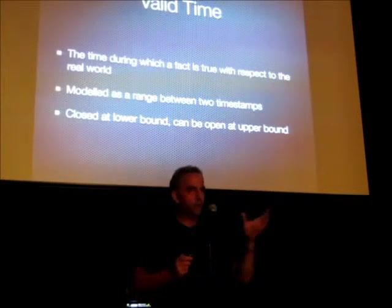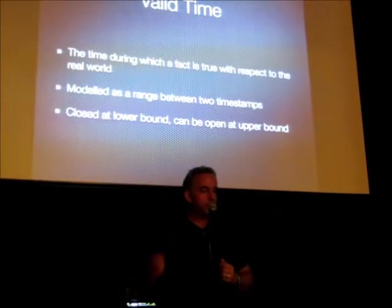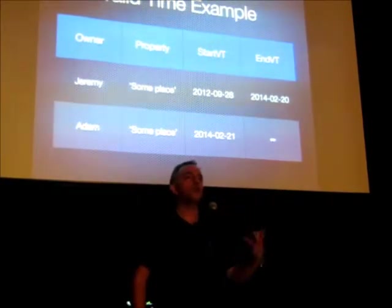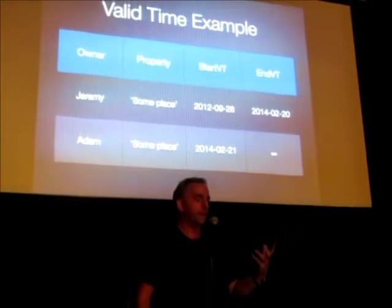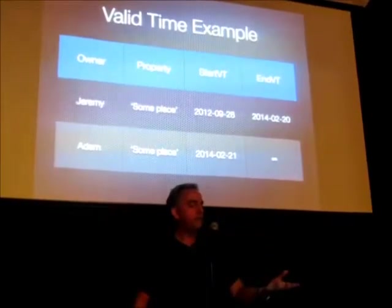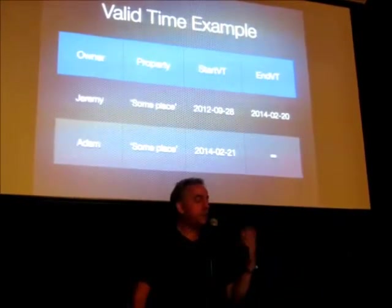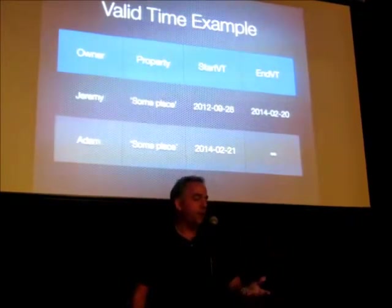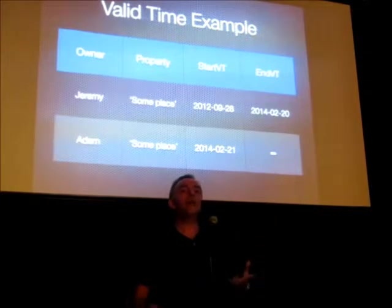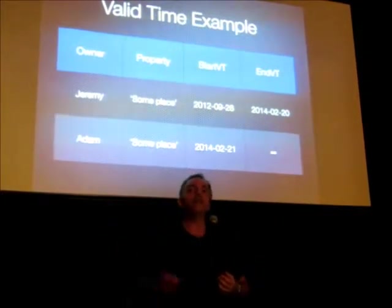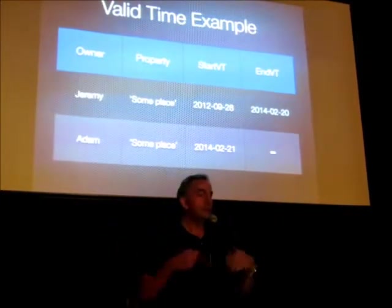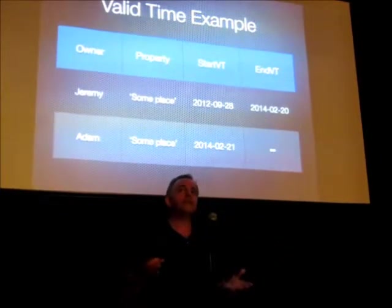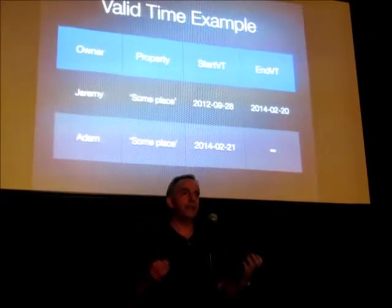This allows us to do forecasting across the future. What does this look like? Very simply, in our example: I owned the property from the 28th of September 2012, I stopped owning it on the 20th of February, and then Adam owns it from February the 21st. He currently owns it, therefore we have no end in the valid time — I've chosen to represent that using the character for infinity. This gets us a long way along to achieving what we need.